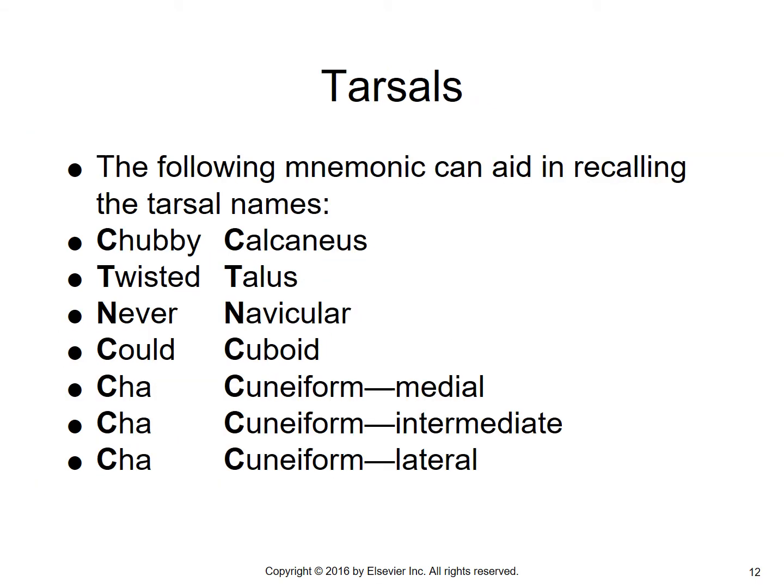There's a mnemonic you might use to remember the tarsals: 'Chubby, twisted, never could cha-cha-cha.' The first letters correspond to the individual tarsals: calcaneus, talus, navicular, cuboid, and then the three cuneiforms — medial, intermediate, and lateral.